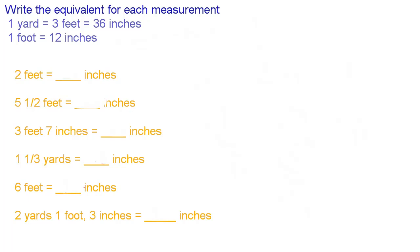The directions say write the equivalent for each measurement. Well when you say equivalent you mean what is 2 feet in inches. So we're basically converting yards or feet into inches. So here we go.